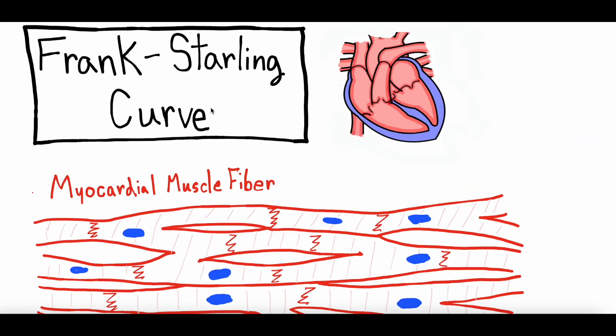The Frank-Starling Curve is a concept in medical physiology. The core idea is that cardiac output and stroke volume — how much blood the heart squeezes out of its ventricle — is related to the filling of that ventricle. All of this is going to make sense by the end.